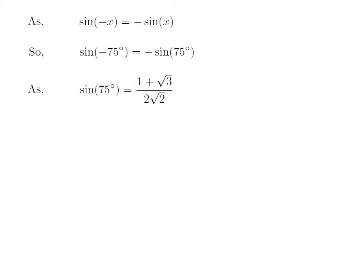The value of sine of 75 degree is equal to 1 plus square root of 3 upon 2 into square root of 2. The video explaining how to derive the value of sine of 75 degree is appearing in the upper right corner.